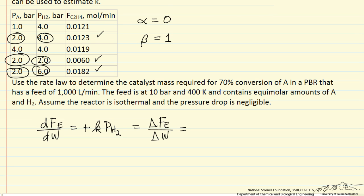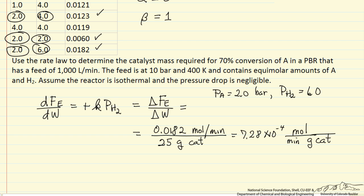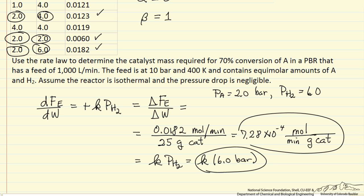Let's pick conditions where the rate is the highest — the pressure of A is 2 bar and the pressure of hydrogen is 6 bar. Notice the rate is 0.0182. Since there is no product in our feed, we substitute 0.0182 and can calculate this approximation to the derivative. This is equal to our rate constant times the pressure of hydrogen, which is 6 bar, so we can solve this equation for k.